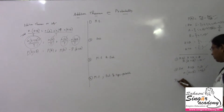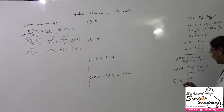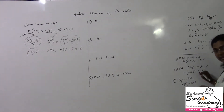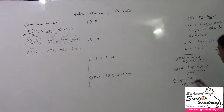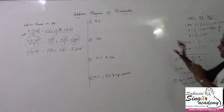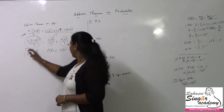With respect to equiprobable or equally likely events, n(A) = n(B), which means n(A)/total = n(B)/total, which is nothing but P(A) = P(B). Now apply this with respect to the addition theorem on probability.